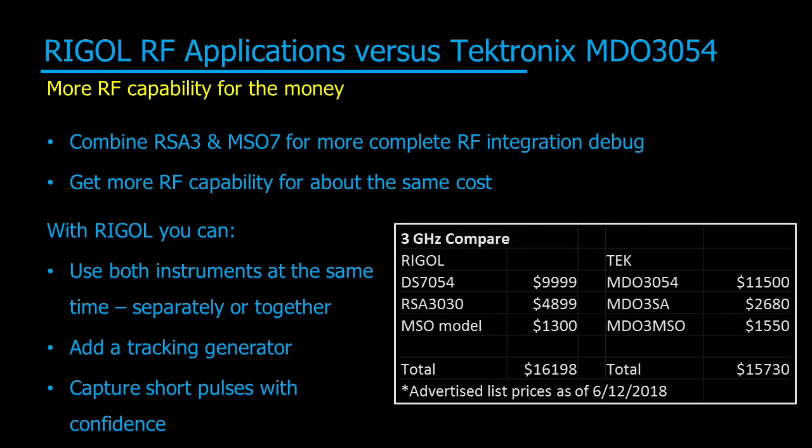Using the Regal RSA 3000 and MSO 7000 together allows you to do more in your RF integration and debug. You can use both the spectrum analyzer and oscilloscope together or separately at the same time, add a tracking generator, and capture short pulses with confidence. For about the same money, the Regal solution provides more capability in your RF applications.